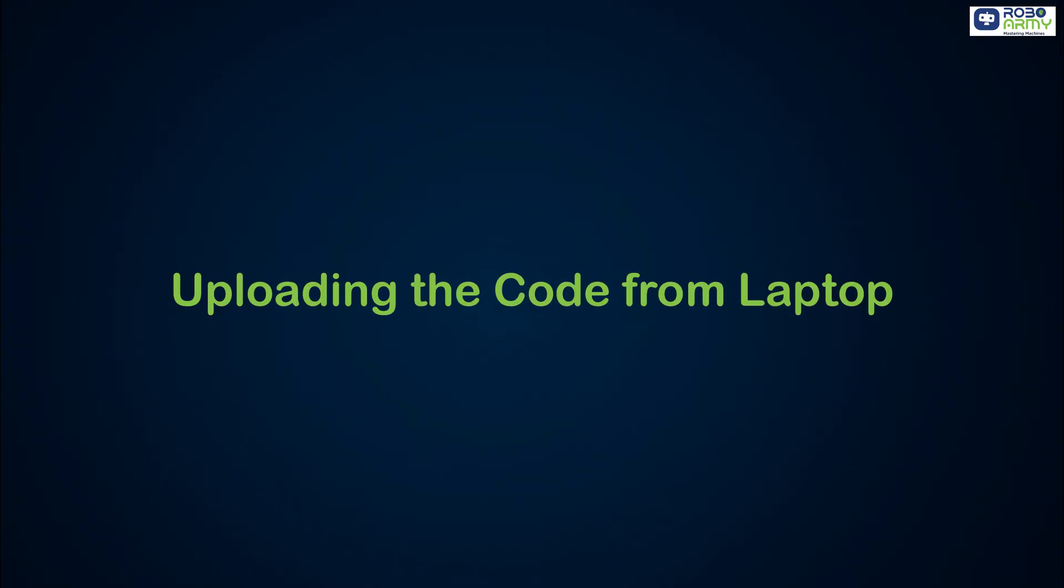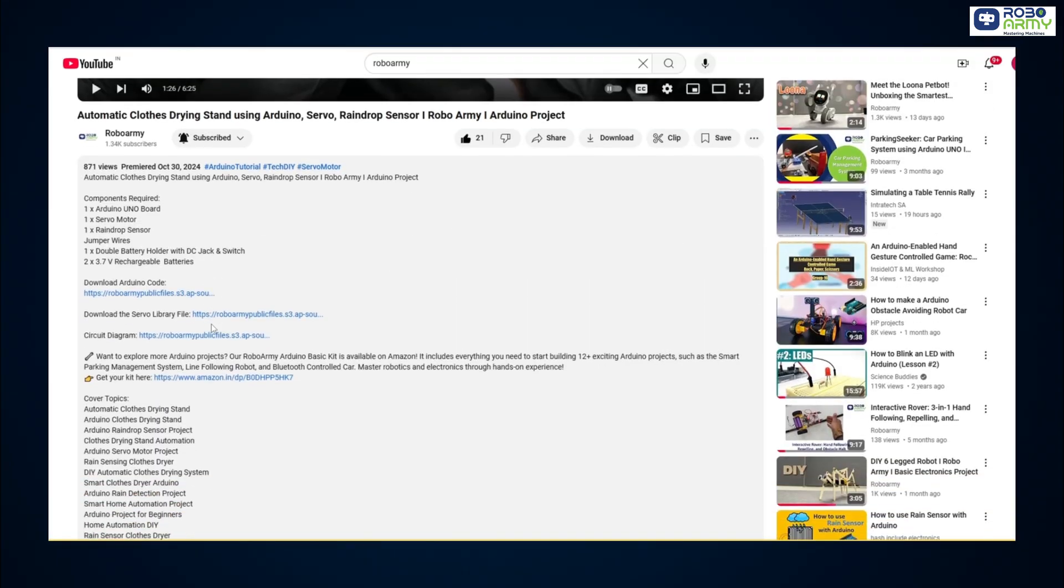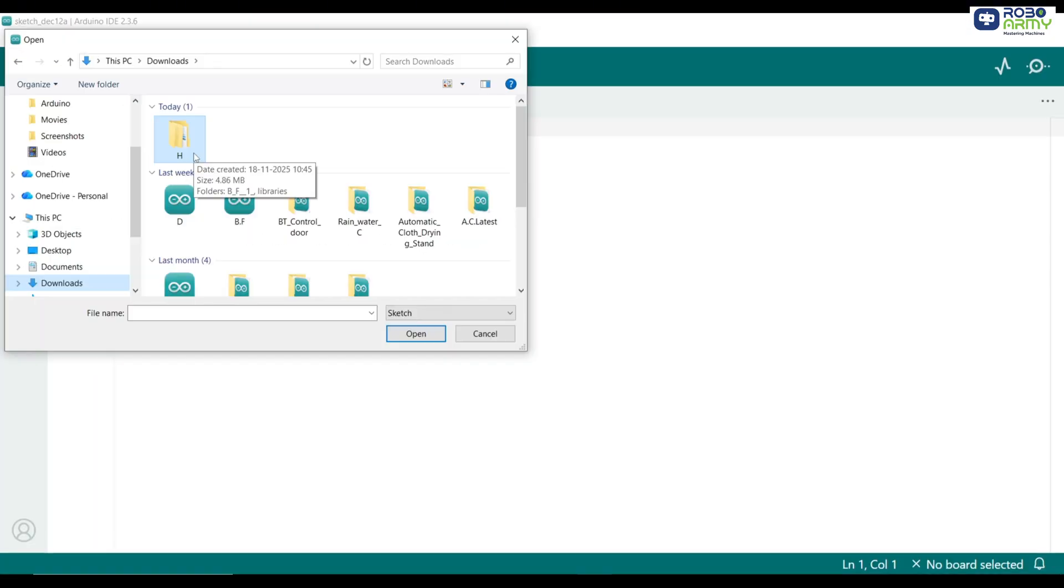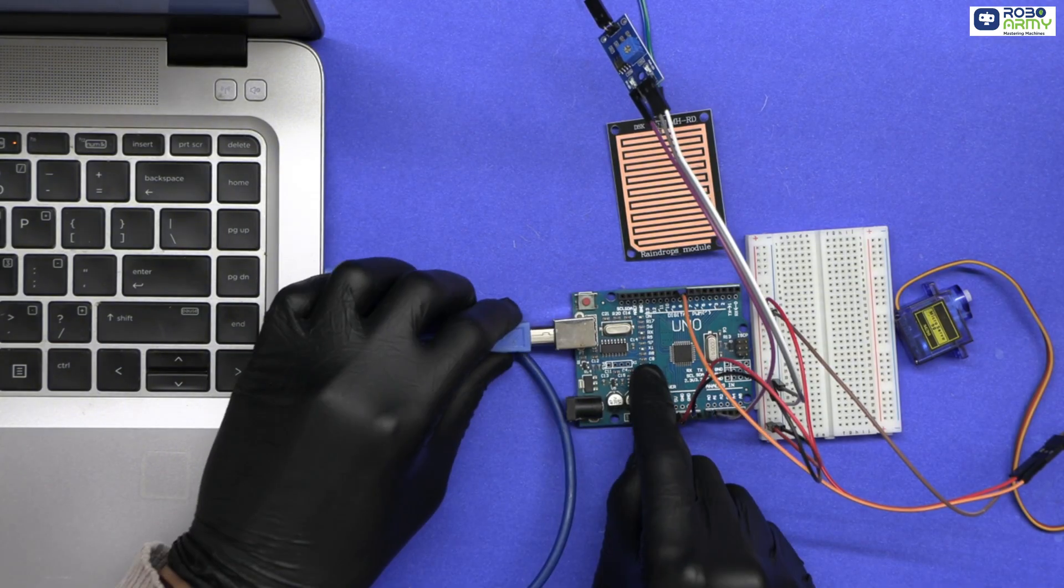Step 4: Uploading the code from laptop. Now comes the exciting part, uploading the code using Arduino IDE on your laptop. Download the project.ino code file from the link given in the video description. Open Arduino IDE, go to file, open and select the downloaded code file.